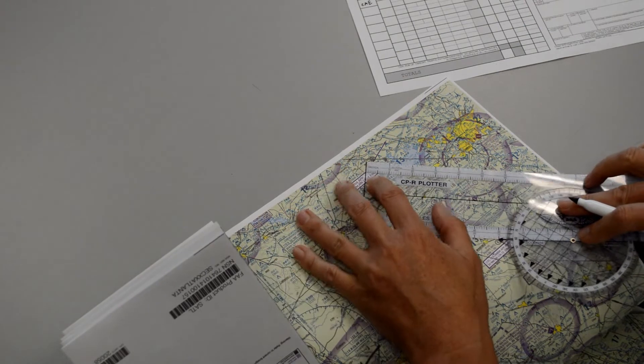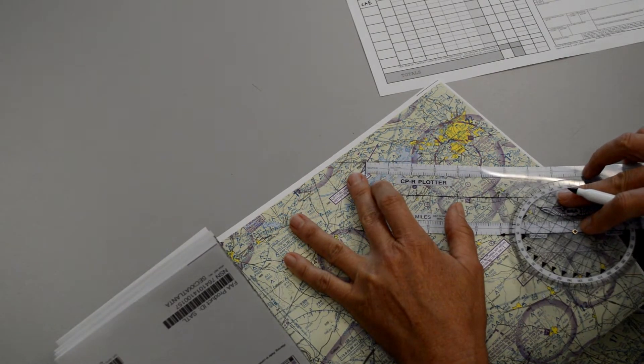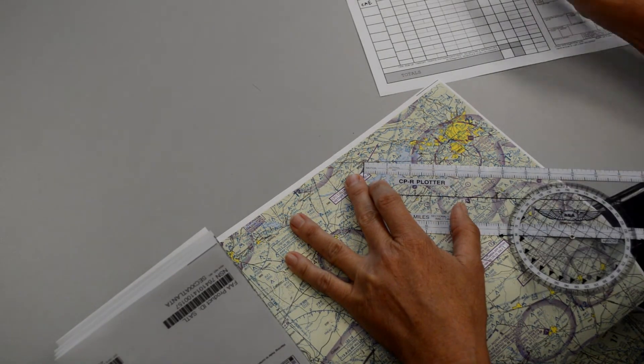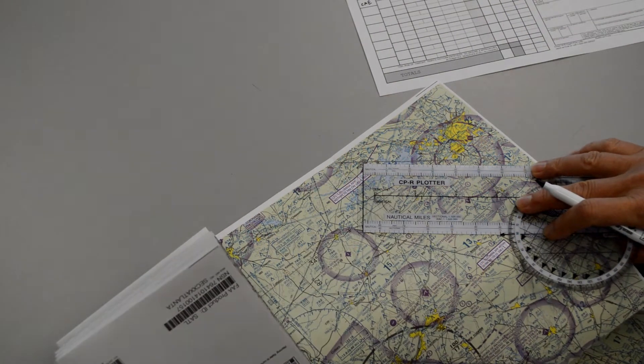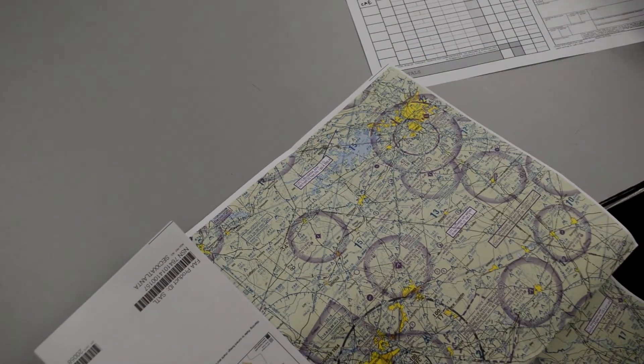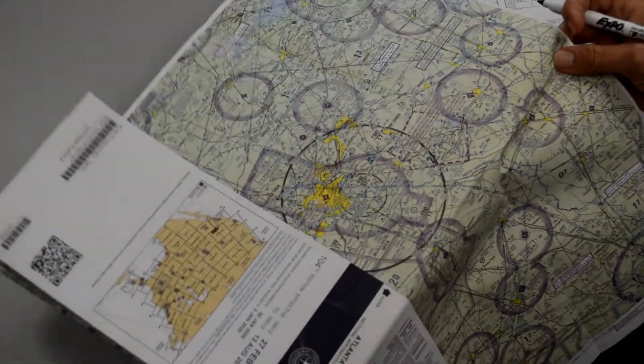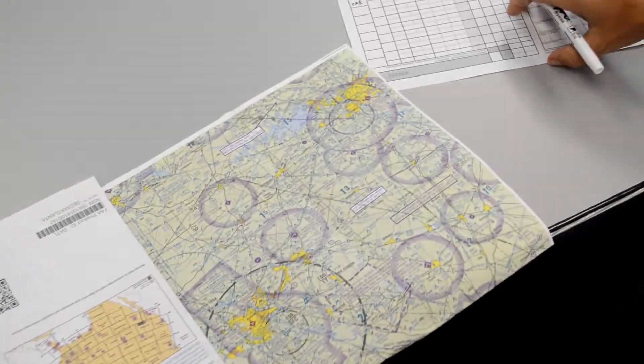Then we have that little short segment before our top of climb, which we'll call 3 miles. We have all our checkpoints marked and written in, and the distances written down on our navigation log.